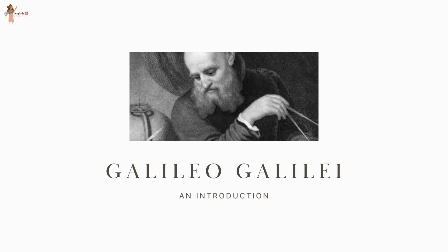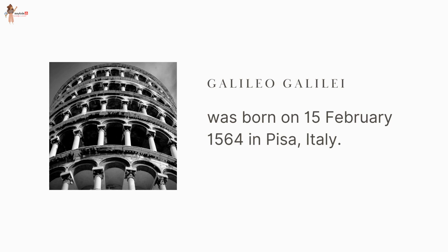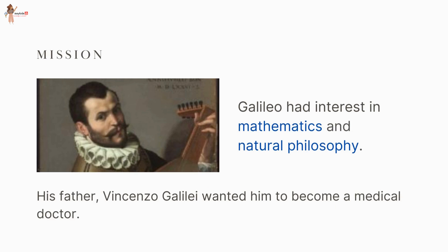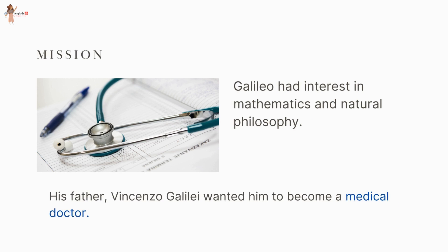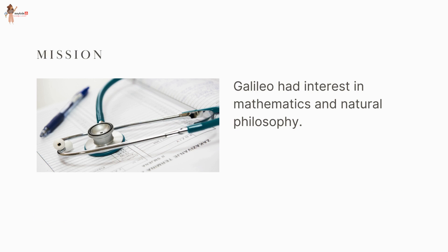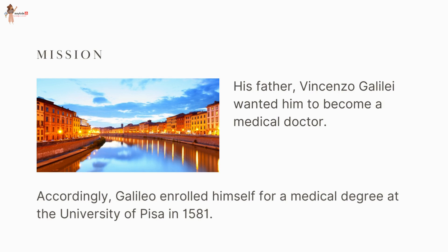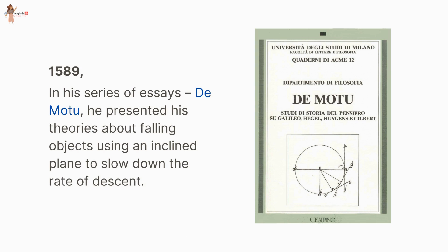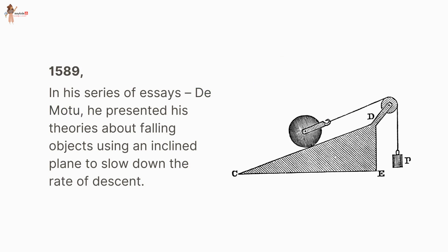Let's get to know the famous scientist Galileo Galilei. He was born on 15 February 1564 in Pisa, Italy. From childhood he had interest in mathematics and natural philosophy, but his father wanted him to become a medical doctor. Galileo enrolled for a medical degree at the University of Pisa in 1581, which he never completed due to his real interest in mathematics. In 1586 he wrote his first scientific book, 'The Little Balance', describing Archimedes' method of finding relative densities. In 1589, in a series of essays 'De Motu', he presented his theories about falling objects using an inclined plane to slow down the rate of descent.